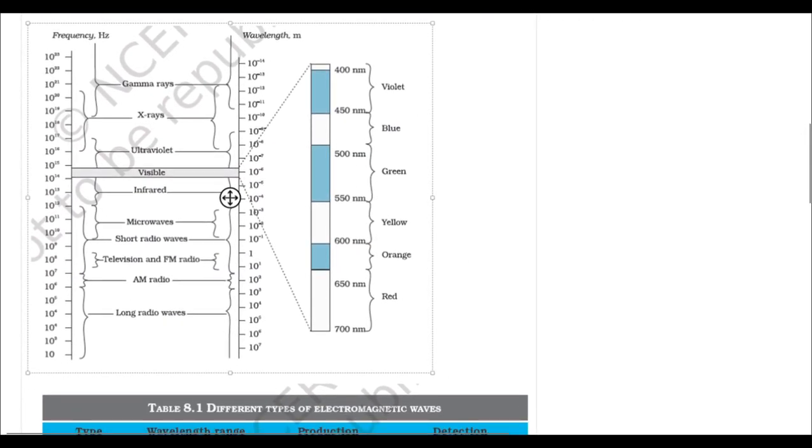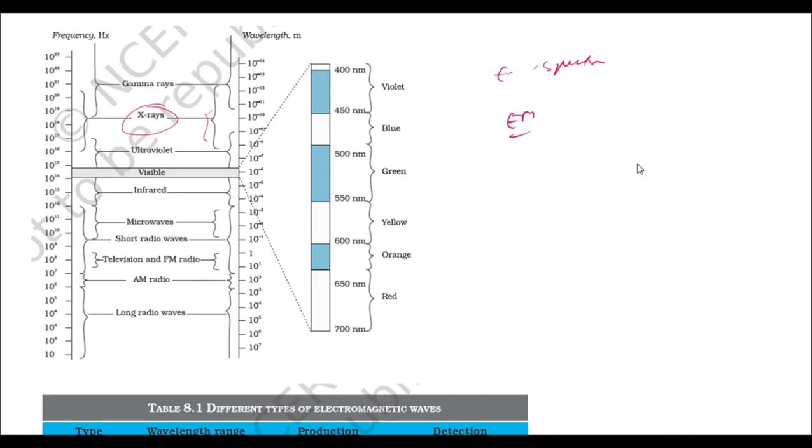In the same EM wave chapter, there is a diagram given with respect to frequencies showing which rays belong to which frequency. This EM spectrum is very important. At least one question will come from this. You'll know the colors, wavelength ranges, and frequencies. Understand how it starts and ends. They can ask which frequency or wavelength is smallest, where visible light falls, and what is its range. Always try to comprehend such diagrams and decode them as fast as possible.